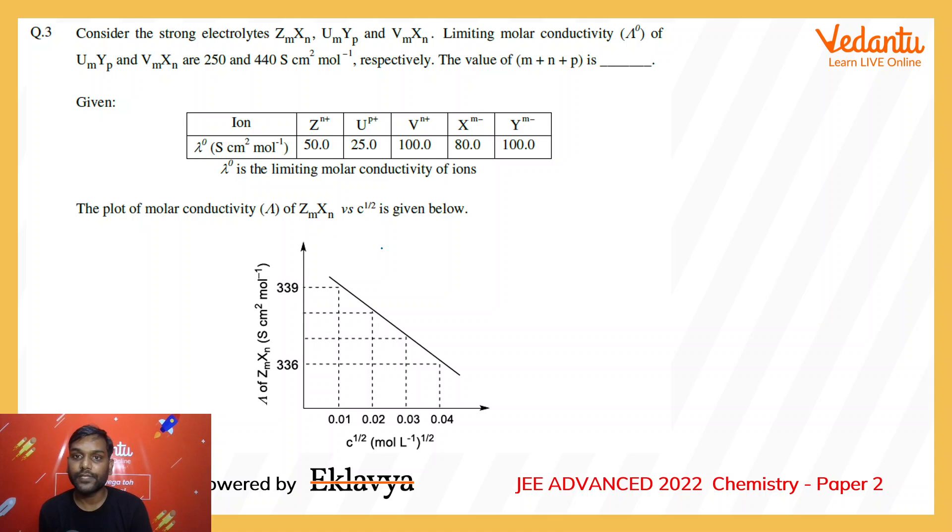They have also given the limiting molar conductivity of different ions: Z^n+, U^p+, V^n+, X^m-, and Y^m-. Also, they have given the variation of lambda (limiting molar conductivity) with root C for the Z_M X_N salt.